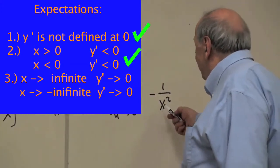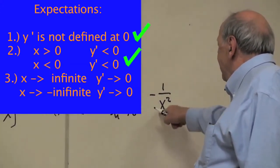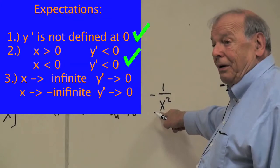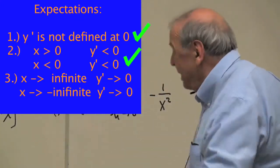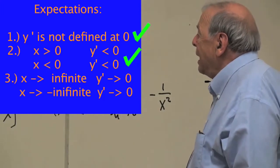And as x becomes very big, it becomes, goes to 0, and as x becomes infinitely, as it goes to the other side, it also becomes that way.